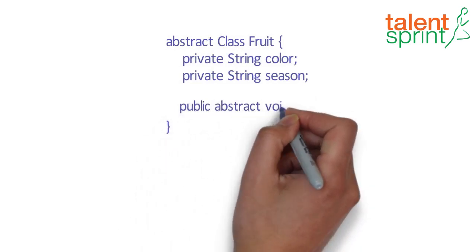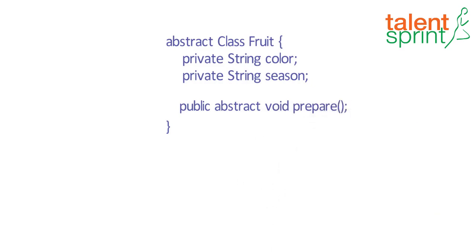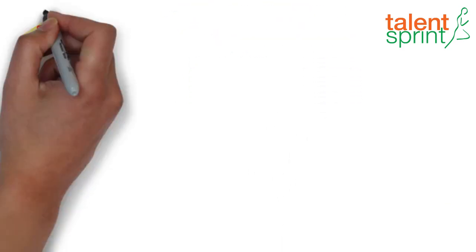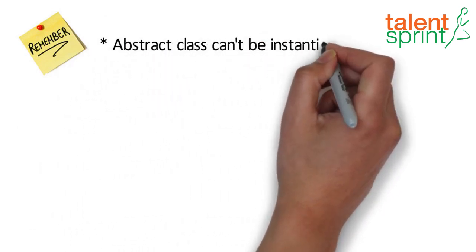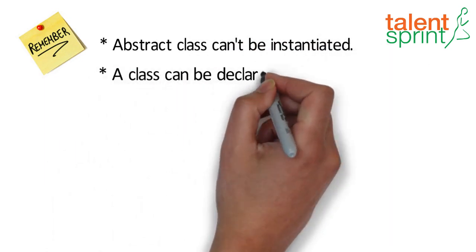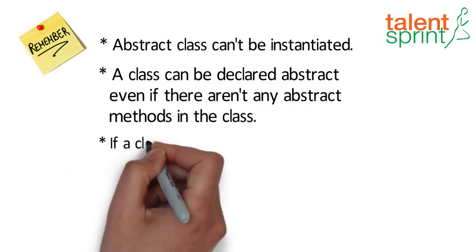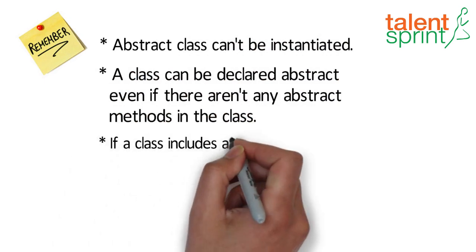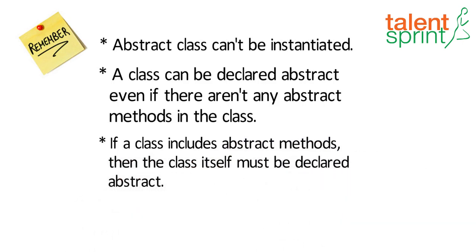An abstract method is a method that is declared without an implementation. There are a few points to remember: an abstract class cannot be instantiated; a class can be declared abstract even if there aren't any abstract methods in it; and if a class includes abstract methods, then the class itself must be declared abstract.